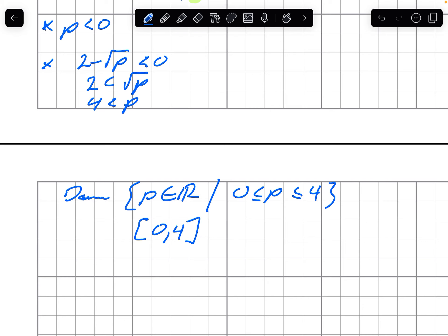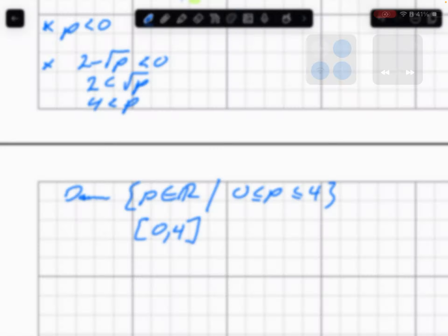So again, the key thing with finding domains of functions is that we're looking for issues. And the big issues we see are even roots of negatives or 1 over 0s. Not the only things that break your domain, but they're the most common things.